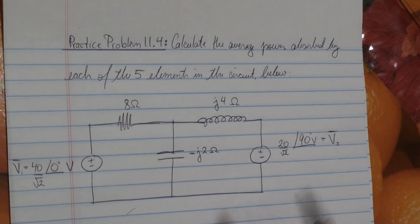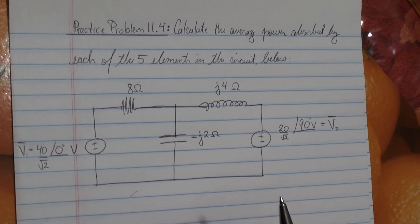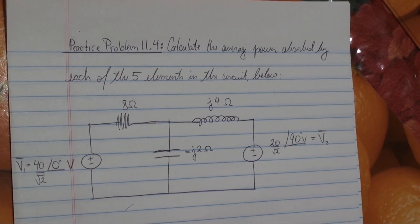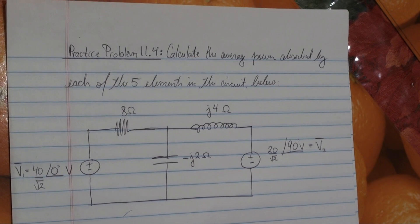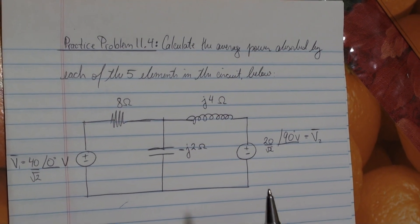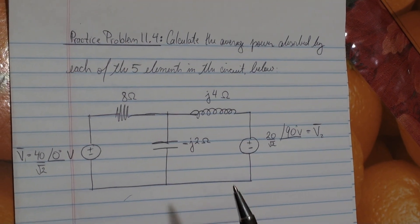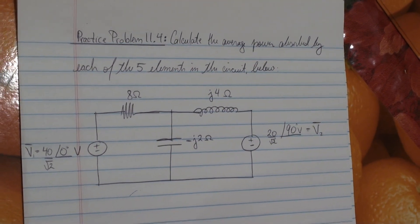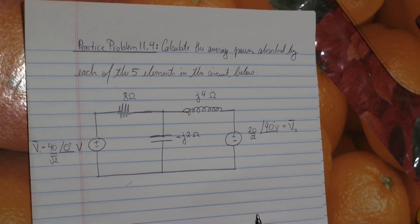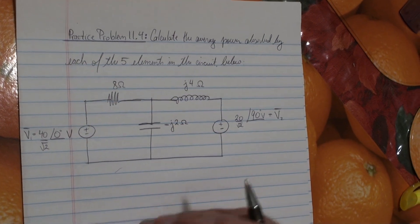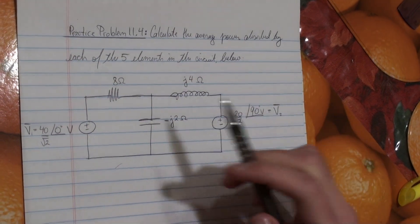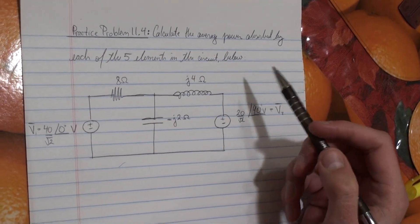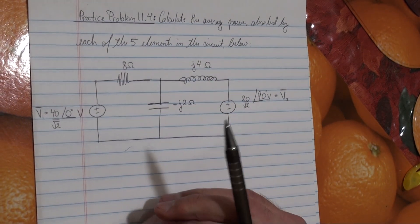Hey guys. This is a solution to practice problem 11.4 from the Fundamentals of Electric Circuits by Alexander and Sadiku. The problem states: calculate the average power absorbed by each of the five elements in the circuit below.